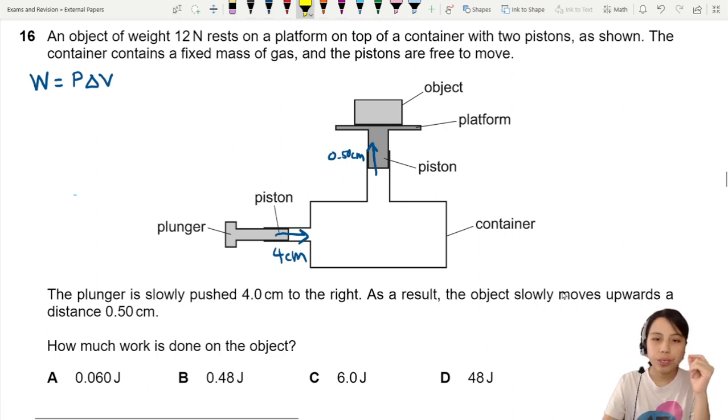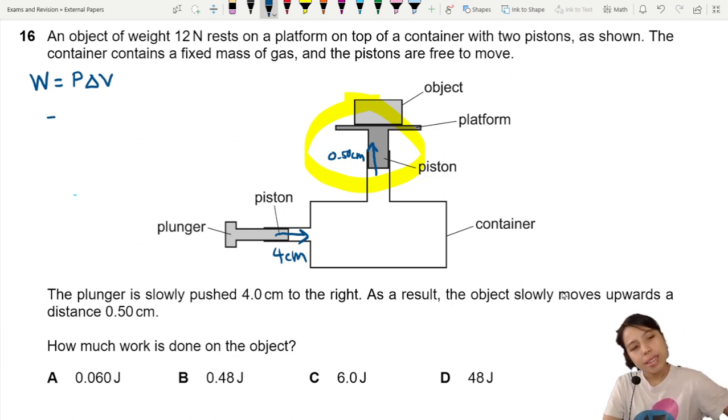We're going to focus more on this side because this is where the work is actually being done, the main thing that we need to find work done on the object. When you look at pressure times the change in volume, pressure is what? What kind of pressure? Why would there be a pressure?